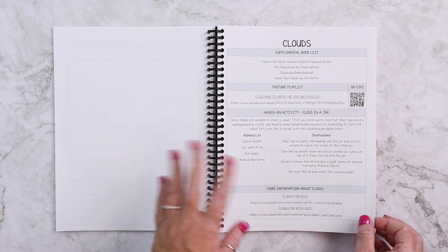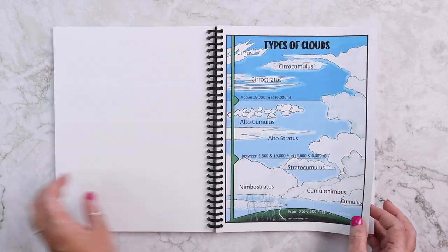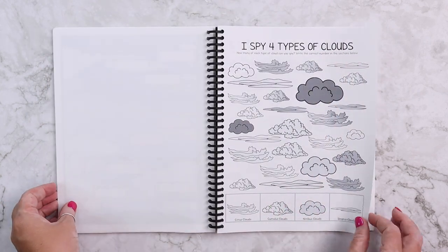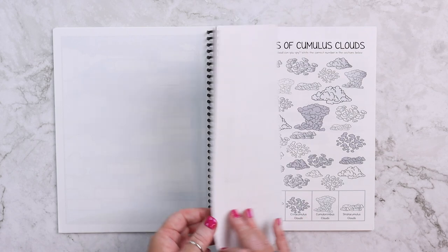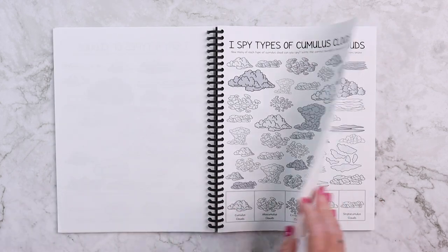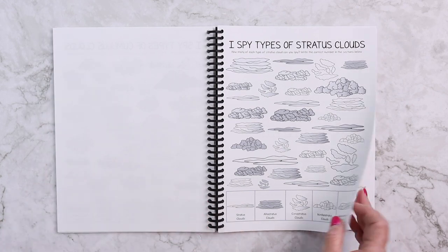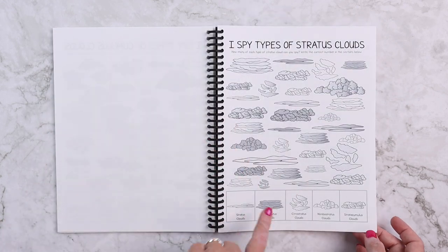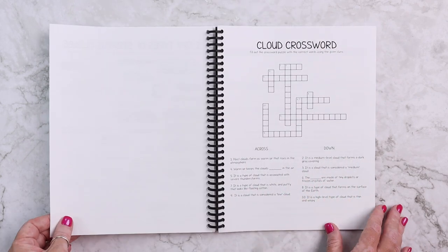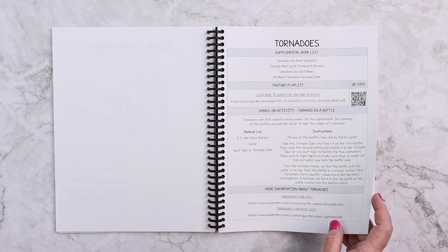The lesson on clouds has the same setup as before. There's an I Spy activity for four different types of clouds, then we get into the specific types — I Spy the different types of cumulus clouds and I Spy the different types of stratus clouds. You could even take these outside to see if you spy them in the sky, which makes it more fun. There's also a cloud crossword puzzle.